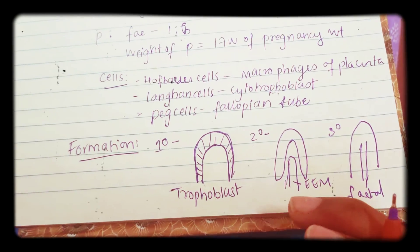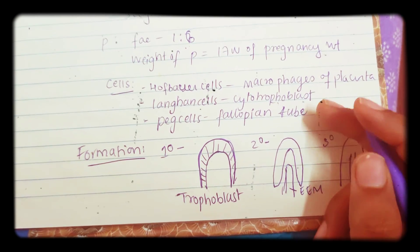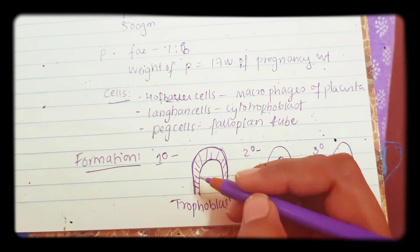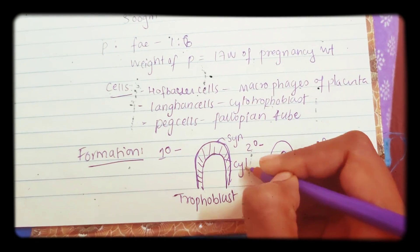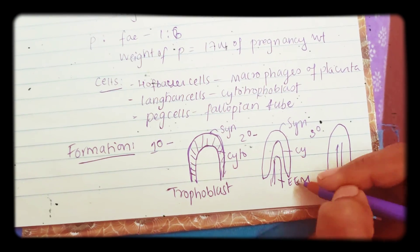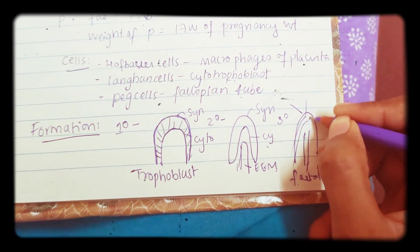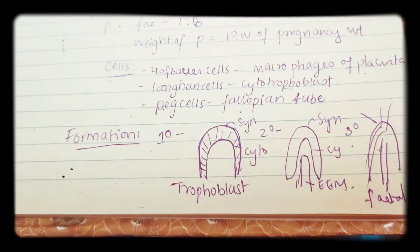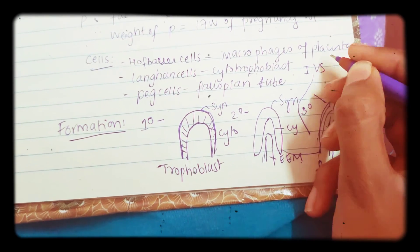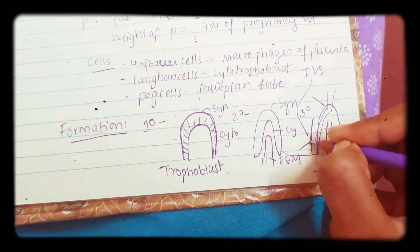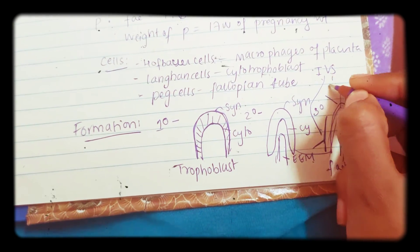In primary villi you have only trophoblast. From secondary onwards, you have syncytiotrophoblast, cytotrophoblast, and extra-embryonic mesoderm. In tertiary villi, you have syncytiotrophoblast, cytotrophoblast, extra-embryonic mesoderm, and the endothelial layer of the fetal capillary. Between the villi there is a space called the intervillus space, where the maternal capillary is present.